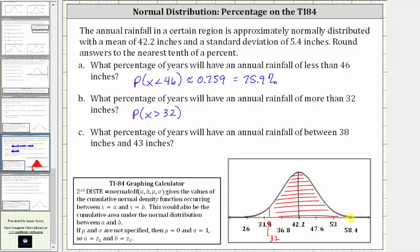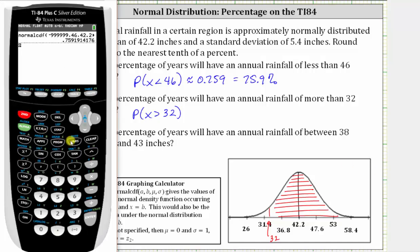Notice now we'll have to exaggerate the right bound or upper bound. Press second VARS, number two. The lower bound is now 32 because we want the area to the right. So we enter 32, enter. The upper bound needs to be exaggerated. For example, 999,999 works well. Enter.